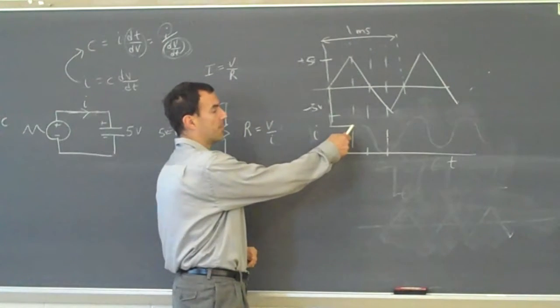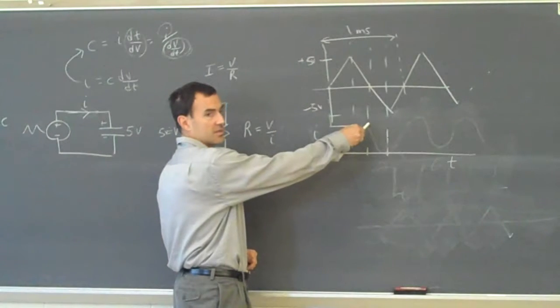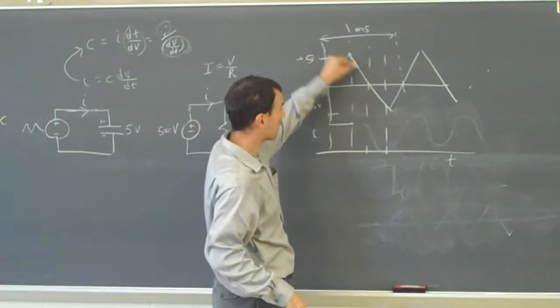When will this current flip negative? Will it flip negative here, or will it wait until this next stop? Right where you're pointing. Okay, right, because it's right here where the slope changes.